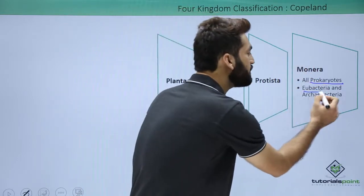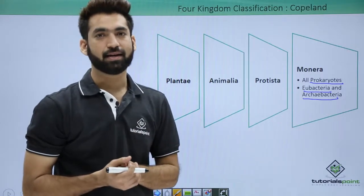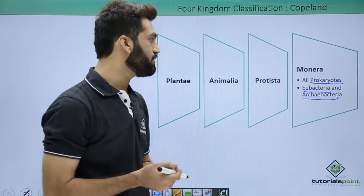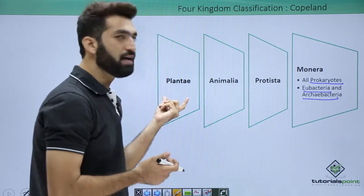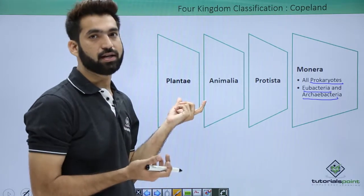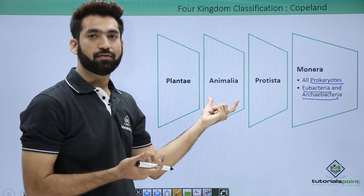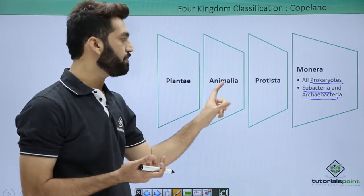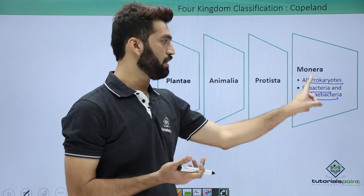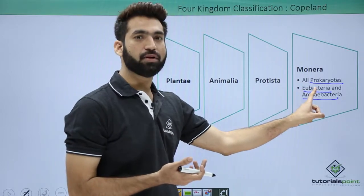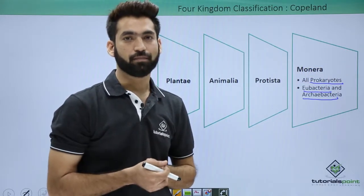Prokaryotes can be eubacteria or archaebacteria, which we will discuss in the six kingdom classification system. Copland's four kingdoms are: Plantae, containing algae and other higher plants; Animalia, containing all vertebrates and invertebrates; Protista, containing all organisms apart from Kingdom Monera; and Kingdom Monera, which emerged as the new kingdom for all prokaryotes.